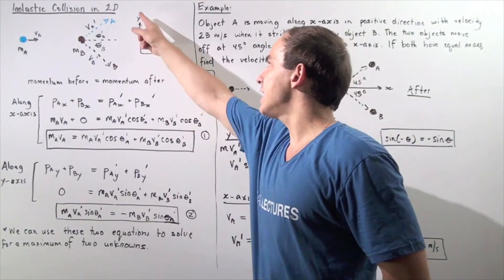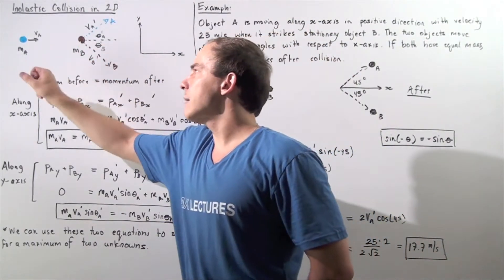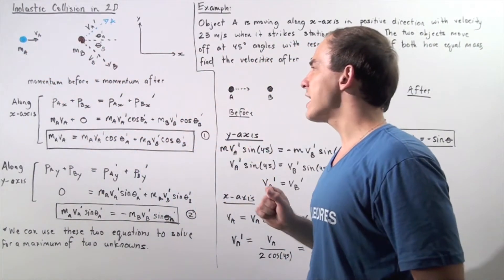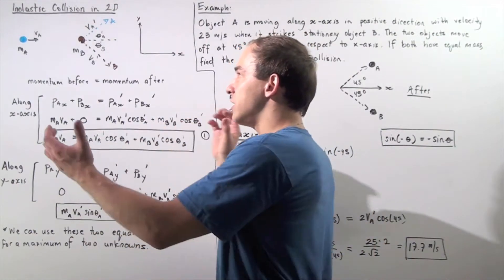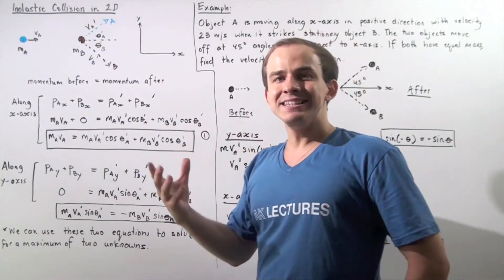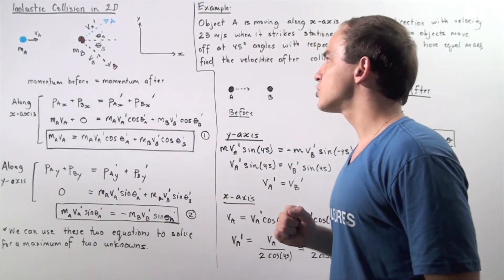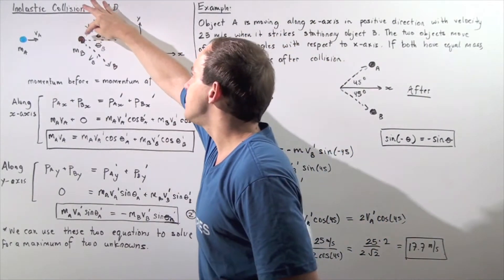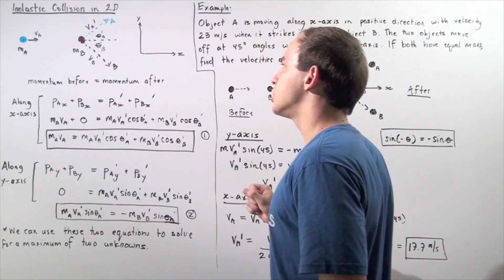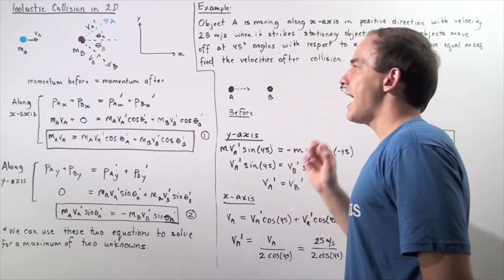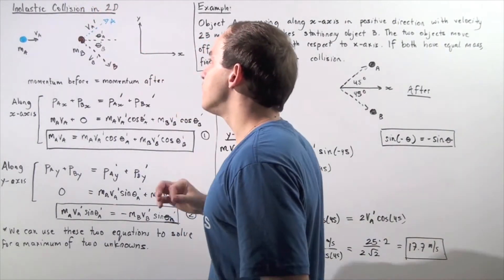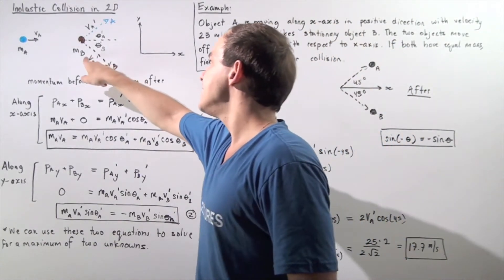Let's suppose we have the X and Y plane. We have two objects: object B with mass MB and object A with mass MA. Before the collision takes place, object B is stationary and object A is moving in the positive direction along the X axis. The collision is not head-on, so they move away in different directions along the XY plane. Object A moves at angle theta A prime and object B moves at angle theta B prime with respect to the X axis, with final speeds VA prime and VB prime respectively.